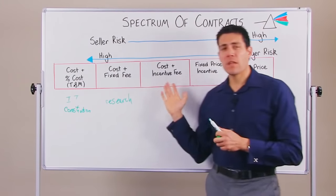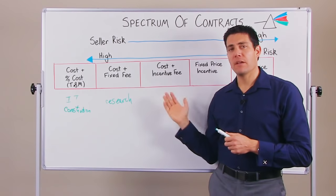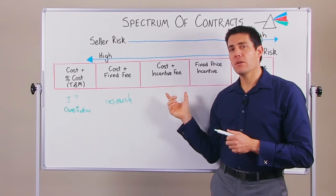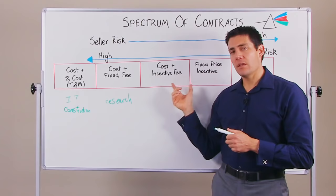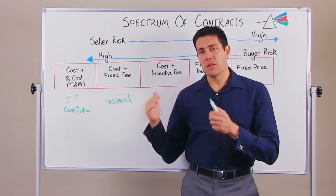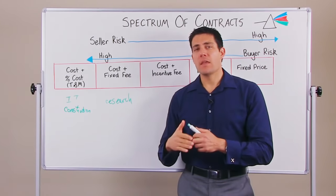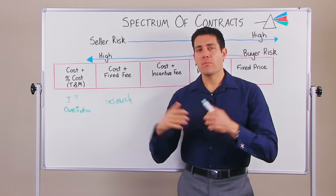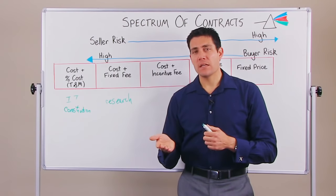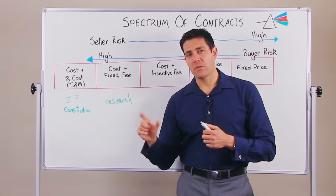The next type of contract is a cost plus an incentive fee. This one is geared so that if the seller works together with you as a buyer to get the project in under budget, they then receive, in a pre-agreed share ratio, an extra incentive for hitting that project under budget.